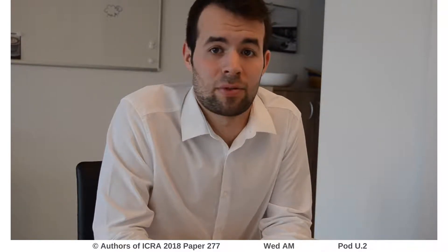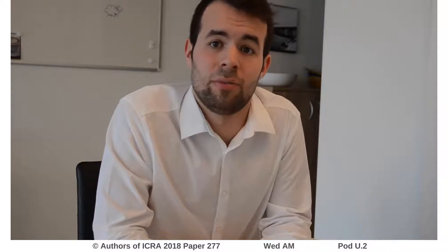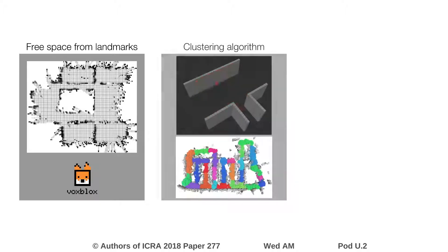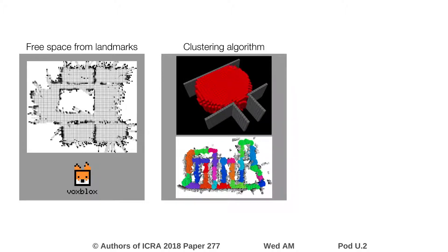In the following, I would like to show the different steps of our algorithm, which are also our main contributions. First, we show that we can extract reliable free space information only from sparse visual landmarks, meaning we do not need any additional depth sensors such as RGBD cameras or laser scanners. We then developed a voxel-based growing and merging algorithm which segments this free space into convex voxel clusters, giving us a topological map of the environment.